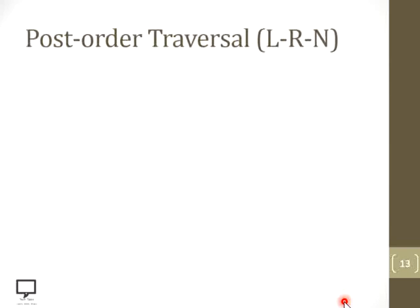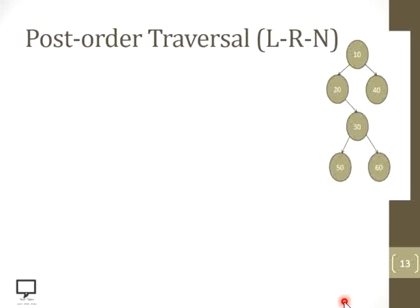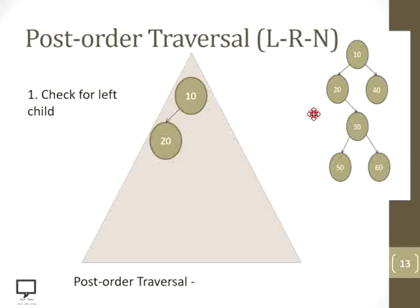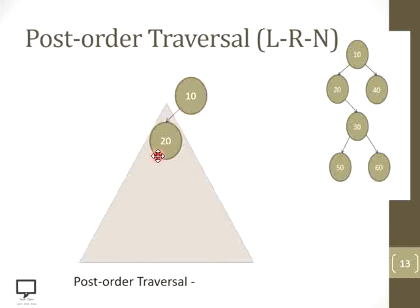Now let's move to a more detailed example of post-order traversal for a given binary tree. I am showing the post-order traversal output at the bottom. Starting from the root node 10 — node 10 is the root node, the topmost element. The first step is to check for a left child. Yes, 10 has a left child, so step down to it and make 20 the new root node. Now check again for a left child of 20.